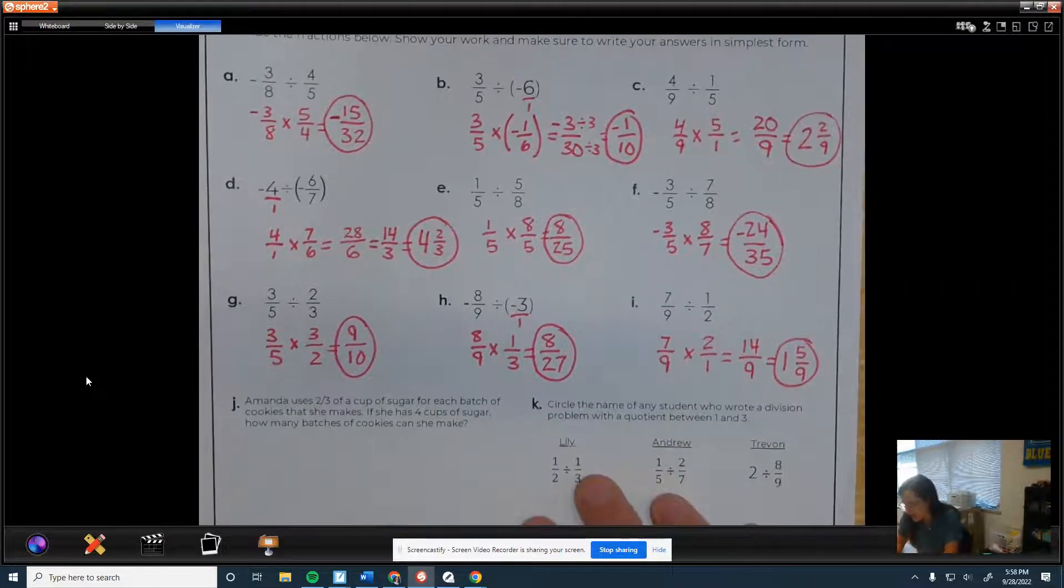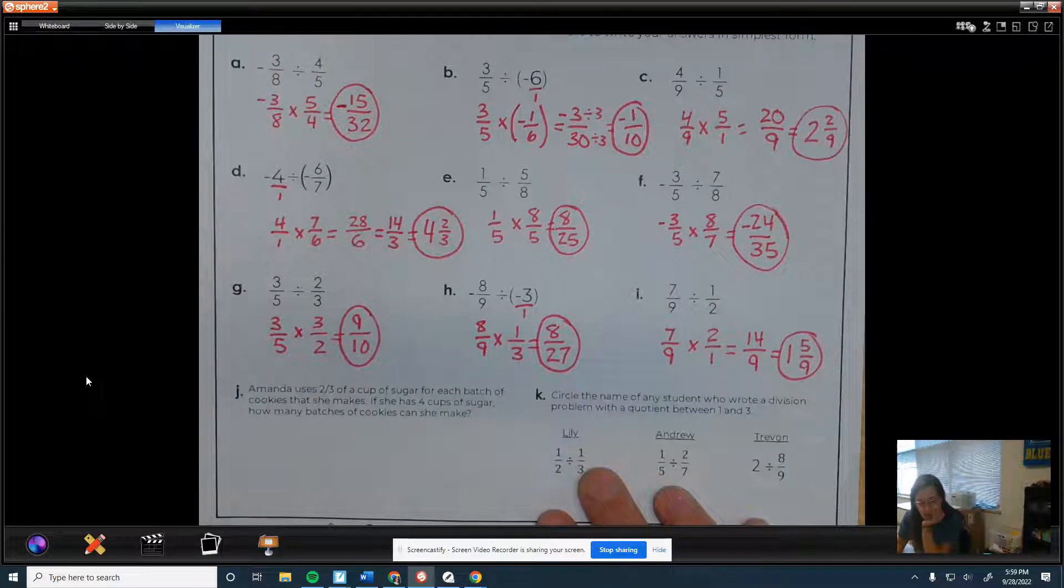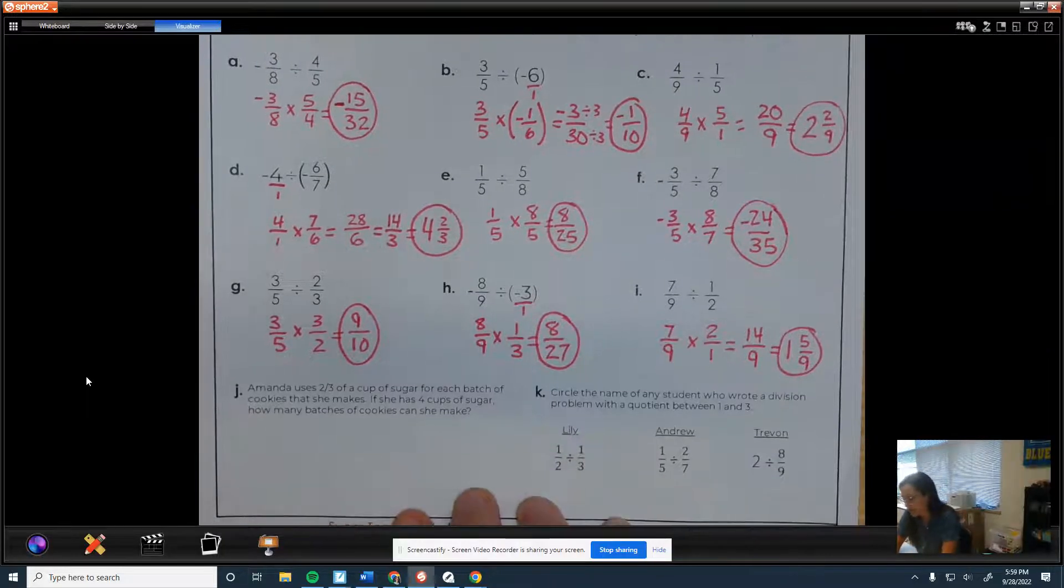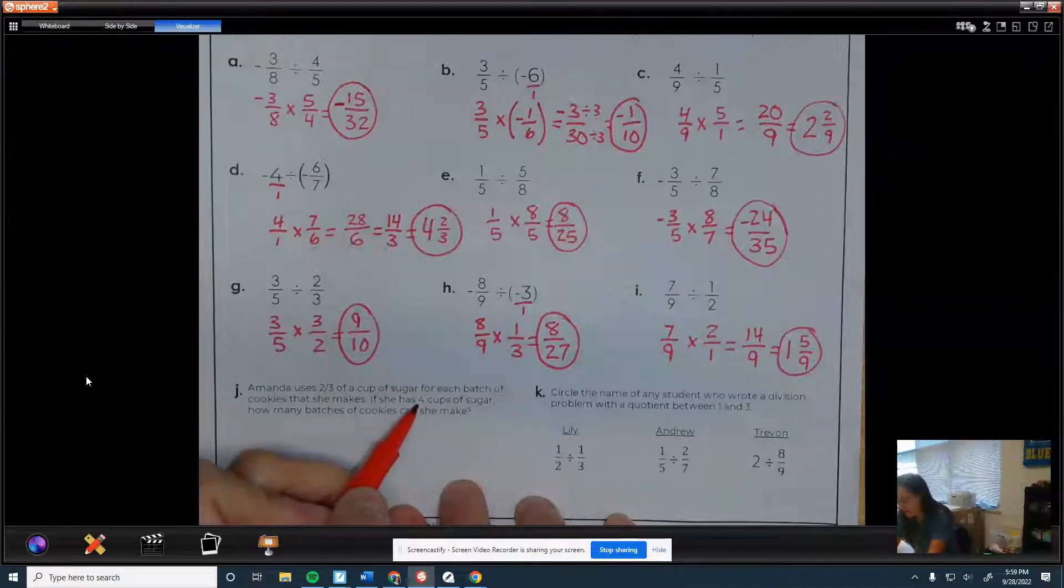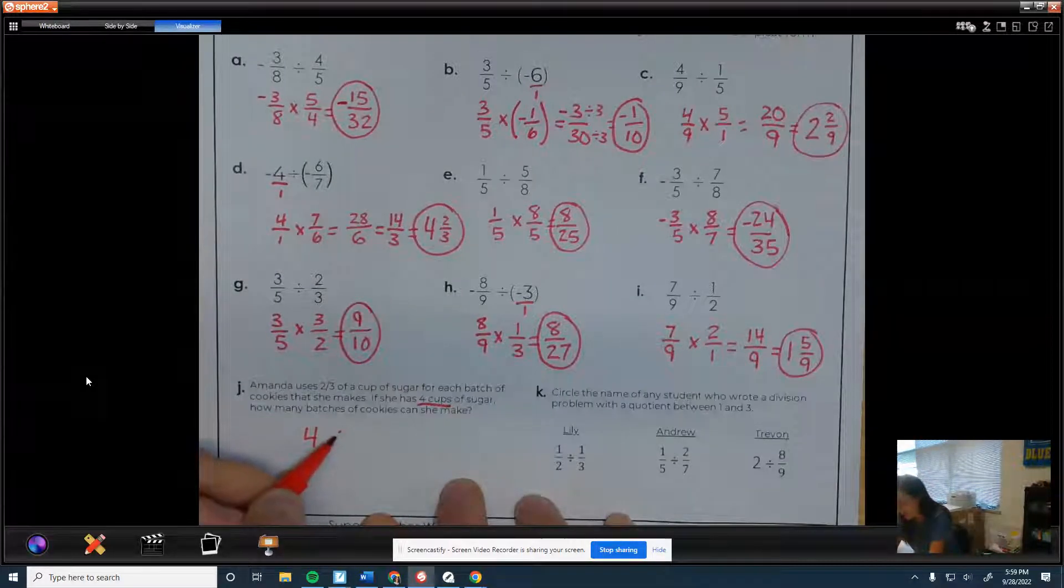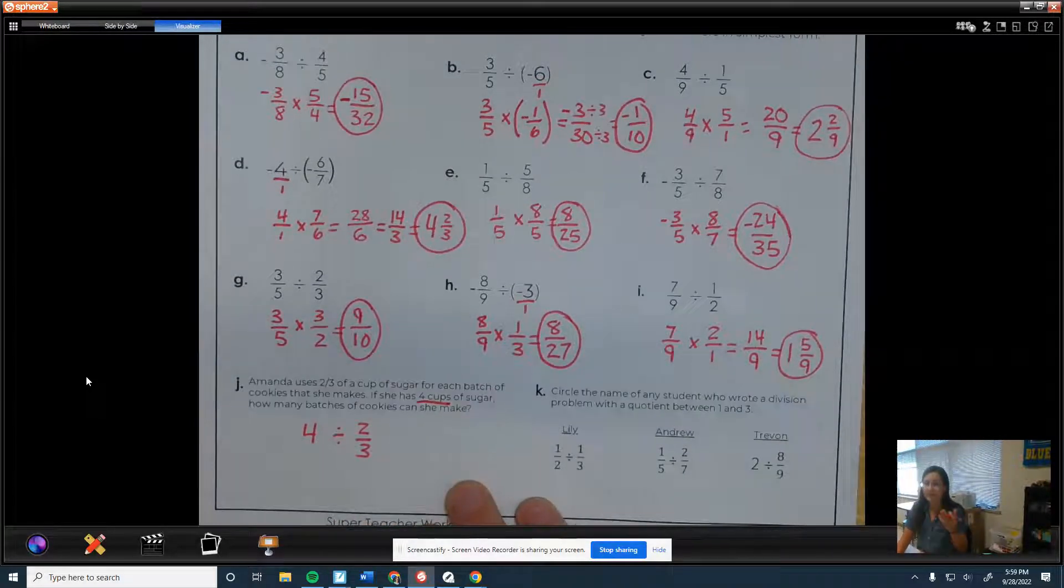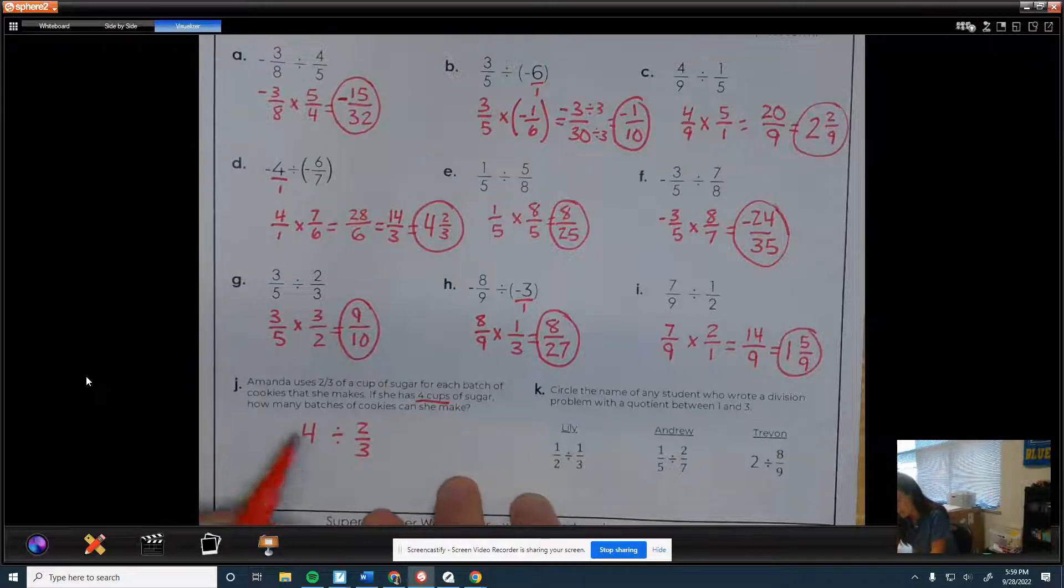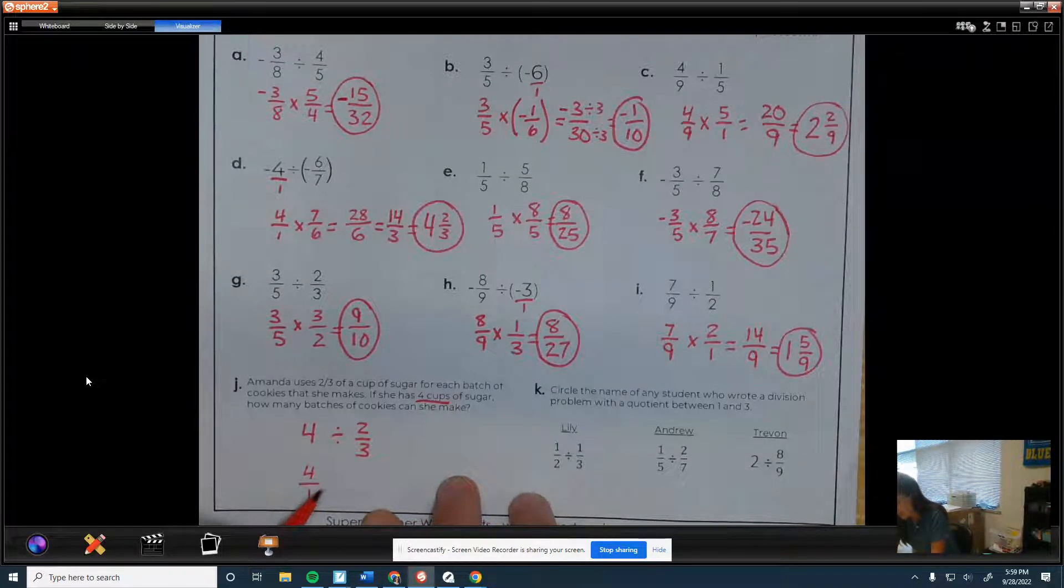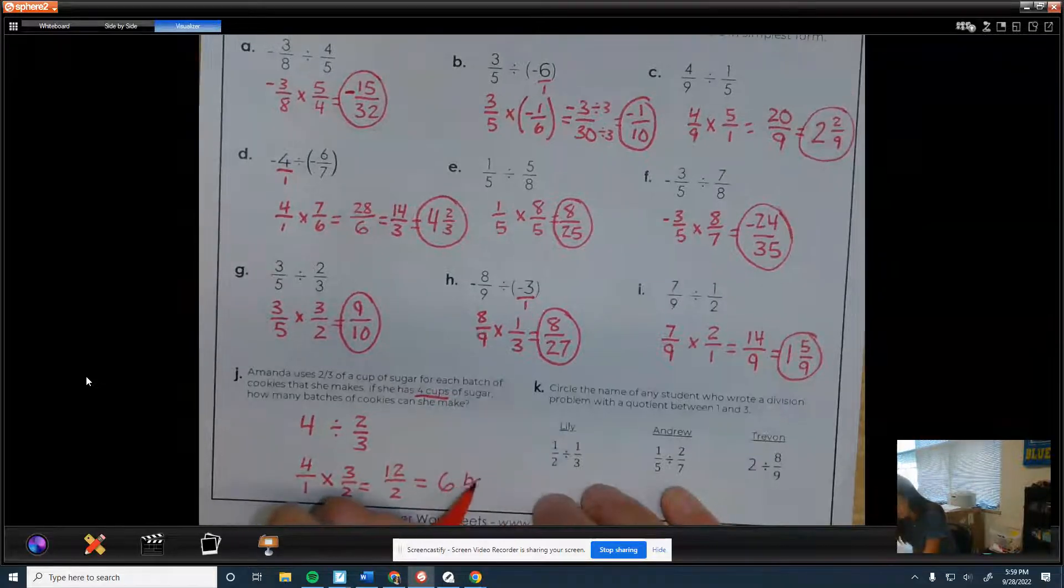Alright, word problem. Amanda uses 2/3 of a cup of sugar for each batch of cookies that she makes. If she has four cups of sugar, how many batches of cookies can she make? So basically you got to figure out how many 2/3 are in four. So whenever you're setting up a division problem, you want to start with the amount that they have. So she's got four cups of sugar. So I'm going to take the four cups of sugar and divide it by 2/3. That way you can figure out how many 2/3 are in four.